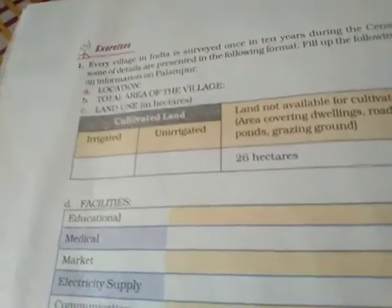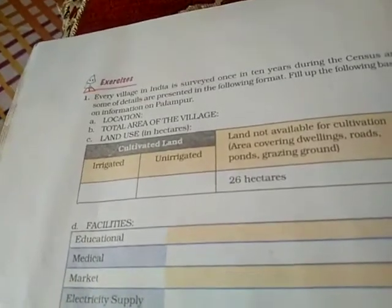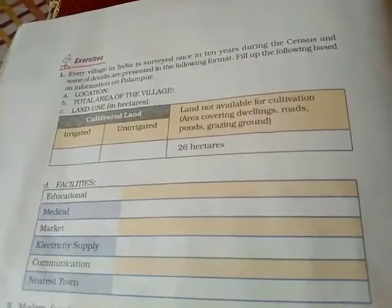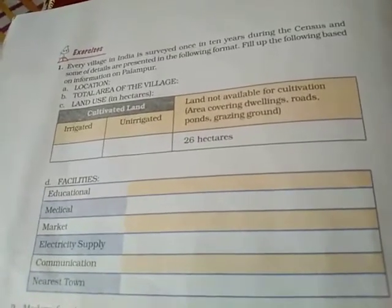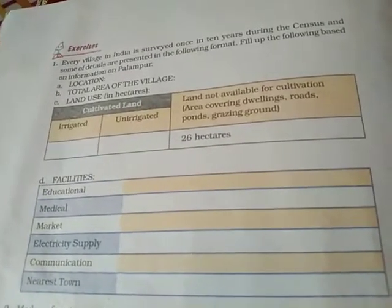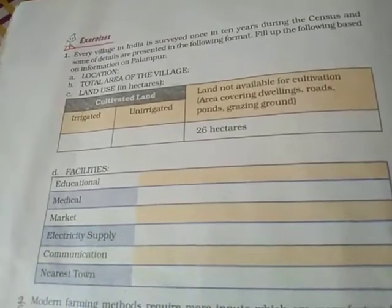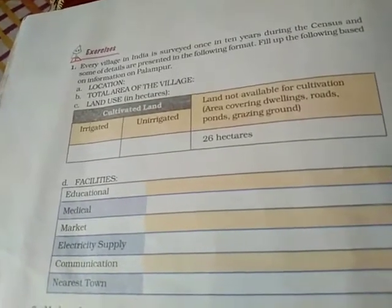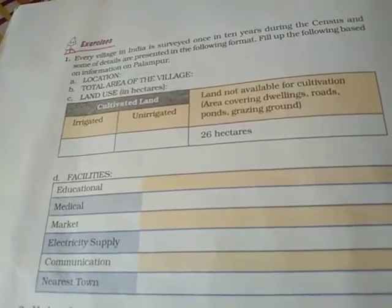Every village in India is surveyed once in ten years during the census and some details are presented in a format. For question one, fill up the following based on information on Palampur. Location: it is three kilometers away from Raiganj, a big village, and further on to the nearest small town of Shahpur. Total area of the village is 226 hectares.